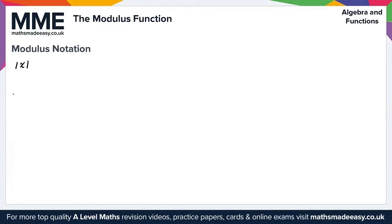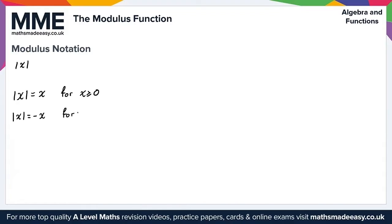Generally speaking, the modulus of x is equal to x for x being greater than or equal to zero, and the modulus of x is equal to minus x for x being less than zero.